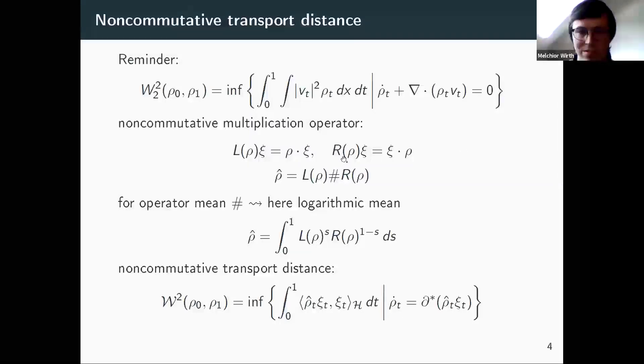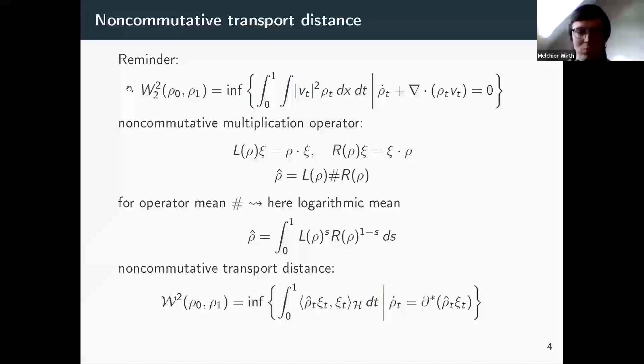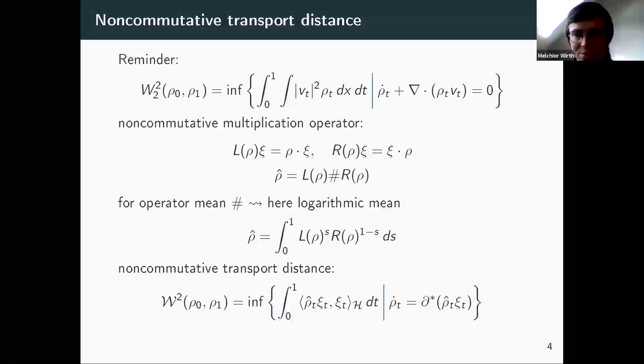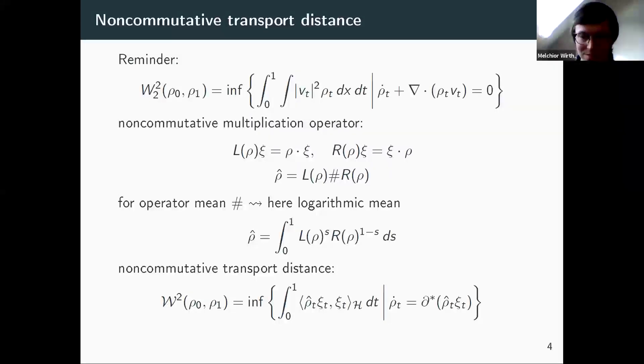And now with these definitions, I can just look at the Benamou-Brenier formula and translate it into my non-commutative setting. So multiplication by ρ_t is replaced by this non-commutative multiplication operator ρ_t-hat. Divergence is actually minus the adjoint of the gradient. I get a different sign here. But else it's all very similar. Just a short remark, really the interpretation of this continuity equation is also non-trivial to find the correct weak formulation. But in principle, it looks all very much analogous to what we did for Euclidean space.